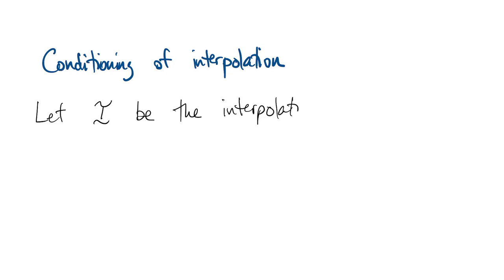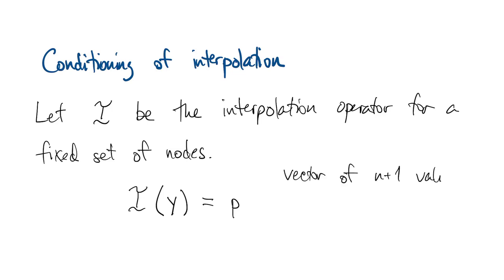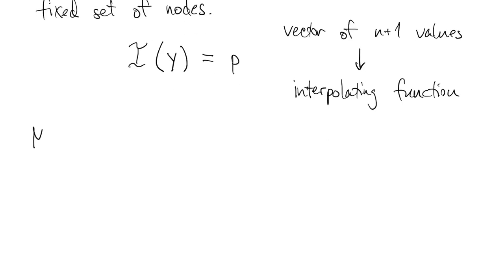Let's now consider the conditioning of the interpolation problem. Let this squiggly capital I stand for the interpolation operator. For a given set of nodes, I maps a data vector to its interpolating function. Most interpolation methods are linear, and ours will not be any exception, which means they satisfy these two simple rules.